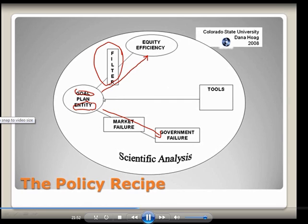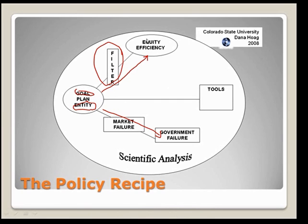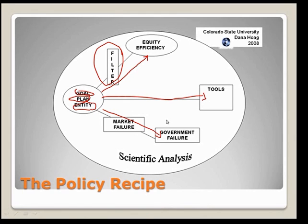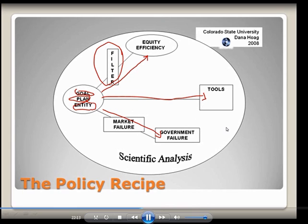Let's talk about the last one, which is tools. If we have a goal — say our goal is to feed the poor — and we have an entity, the government, then we have to have a plan. How are they going to do that? The plan is going to have a set of tools, which we'll discuss, like taxes, regulations, subsidies, and so forth.